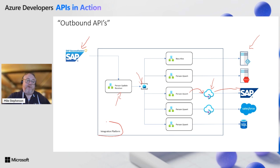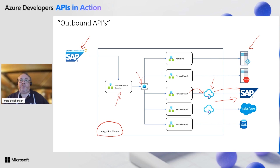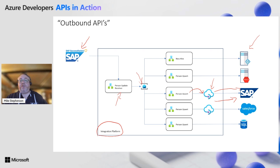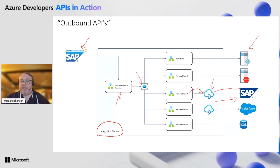I would refer to this as an outbound API from the perspective of an integration developer — the direction of these operations goes from the platform to a third-party system. In this case, you can centralize security for connecting to SAP, centralize monitoring, and centralize any mapping capability reused across multiple integrations. You can reuse the proxy APIs built to sit in front of SAP. API management's role is really about making integration simpler and providing those reusable services.